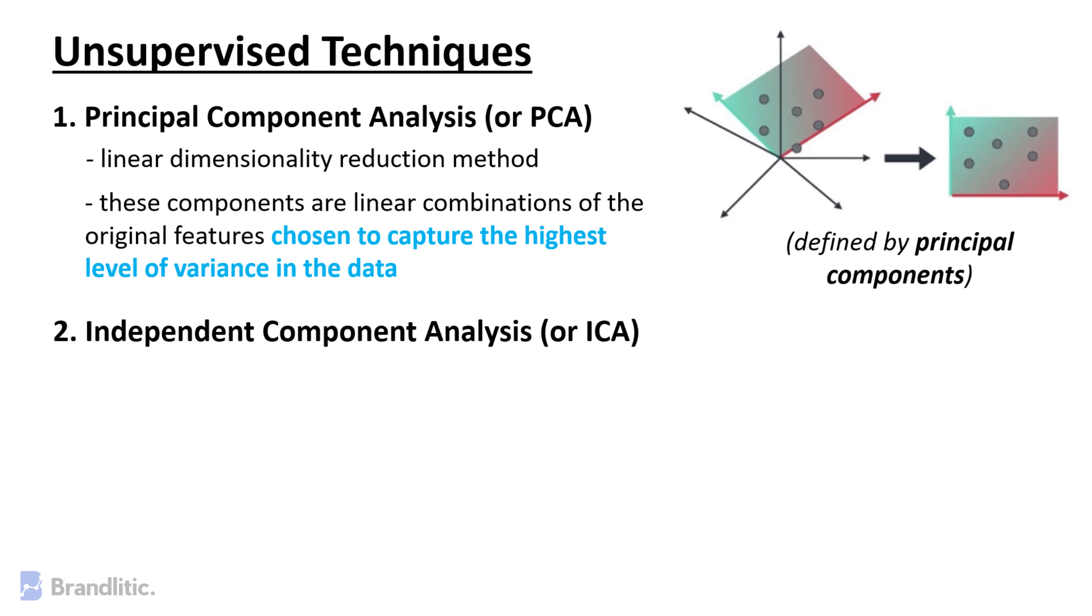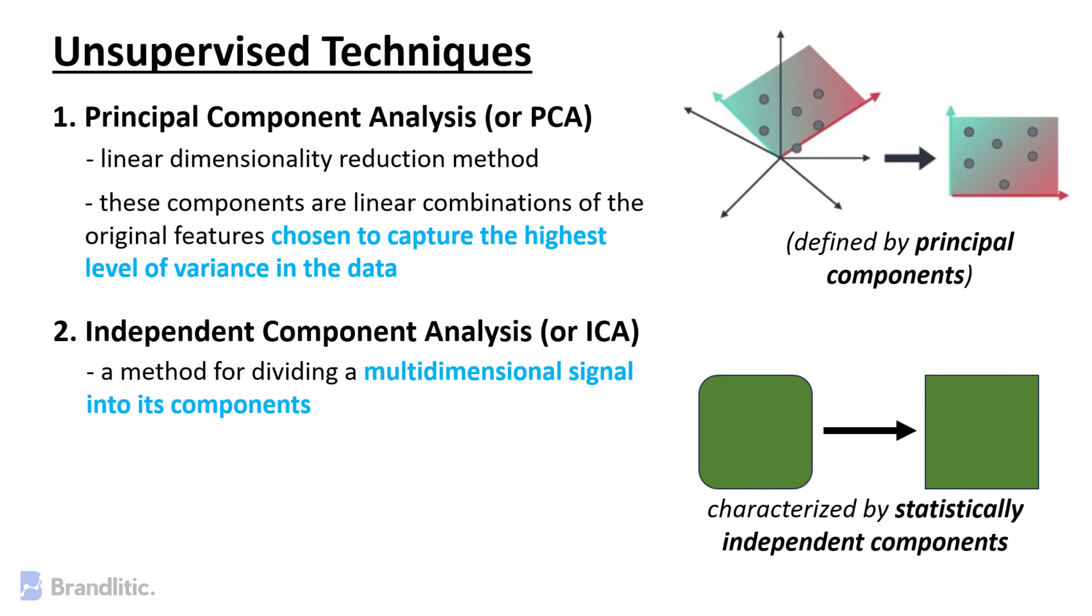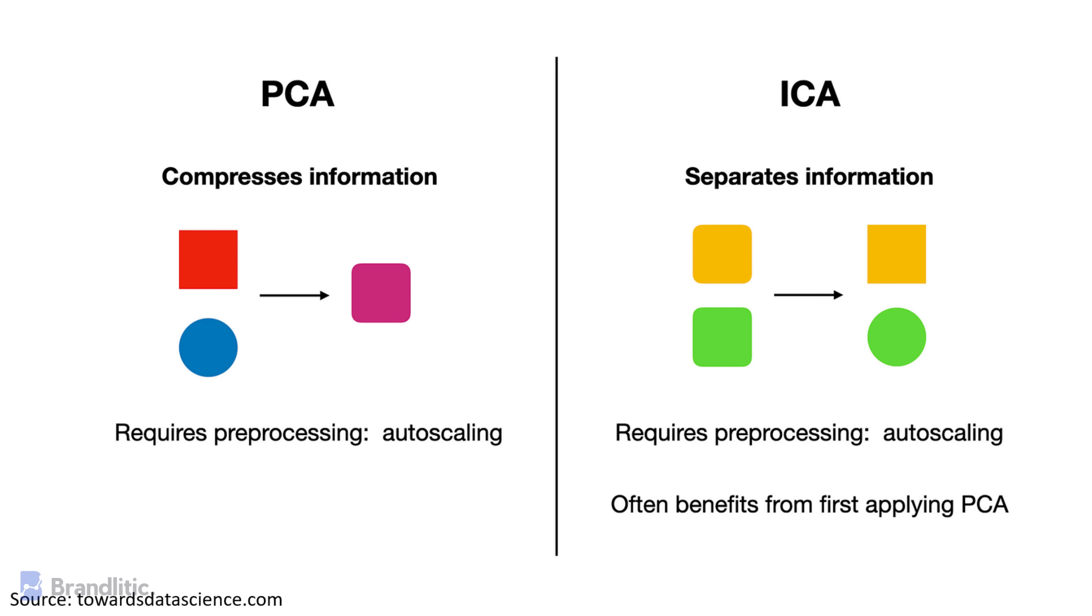Independent Component Analysis or ICA, which is a method for dividing a multidimensional signal into its components. In the context of feature selection, ICA can be used to convert the original feature space into a new space characterized by statistically independent components. You may decrease the dimensionality of the dataset while keeping the underlying structure by picking the top K-independent components.